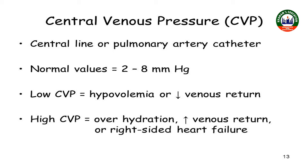If the CVP range is seen to be around 20 cm, there could be conditions like heart failure. In children, the CVP range is 3 to 6 cm of H2O. The CVP range can increase or decrease depending upon the conditions.